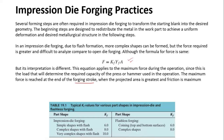For impression die forging, certain predefined values for the shape factor Kf are used: for simple shapes of flash, Kf = 6; for complex shapes, Kf = 8; for very complex shapes, Kf = 10. For flashless forging, Kf can be 6 or 8.